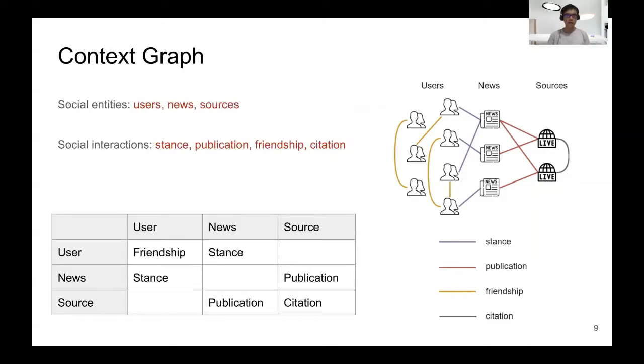In our social context graph, we have three major social entities: the users, news, and sources. We also model the interactions between them. Between users and users, we have social friendship. Between users and news, we have stance relationships indicating the opinions that users have towards certain news. Between source and news, we have the publication relationship. And between source and source, we have citation relationships, indicating if a source has cited another source in one of their published articles.